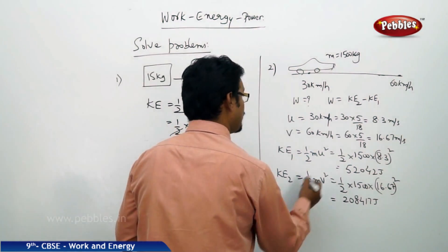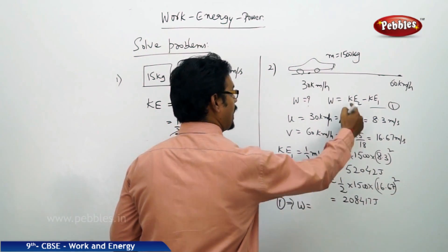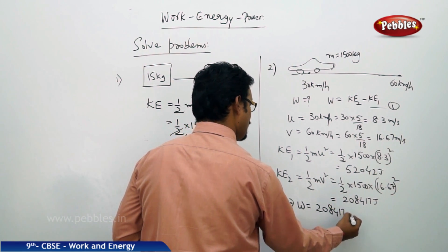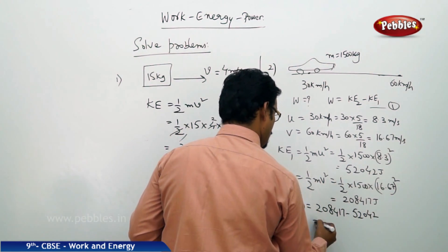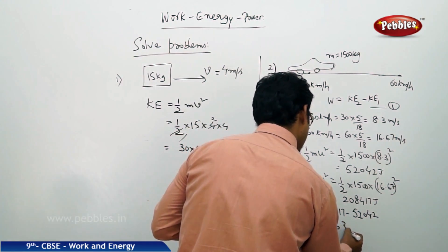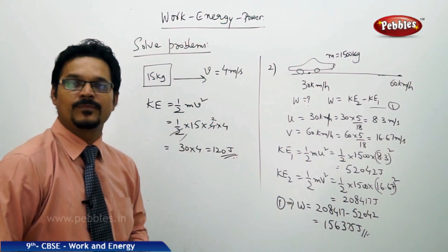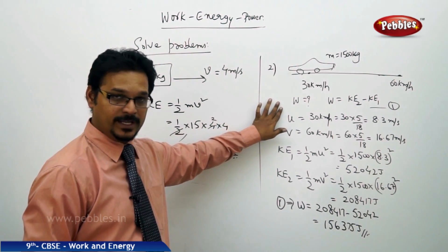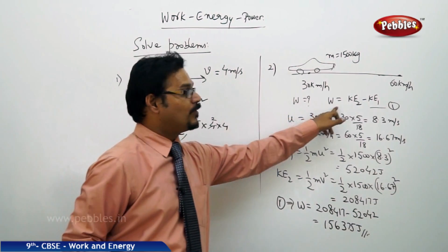Now the amount of work done: if you take equation 1, the amount of work done is KE2 minus KE1, which is 208417 minus 52042. If you subtract it you get 156375 joules. So you should remember whenever you are unable to solve work done without giving force and acceleration, you can apply work energy theorem.